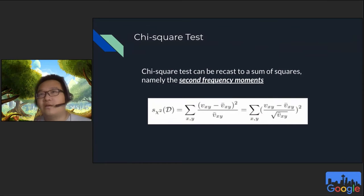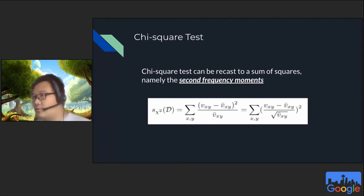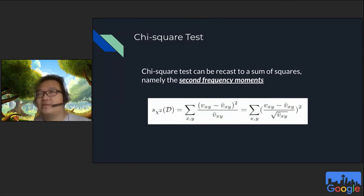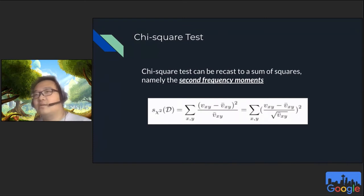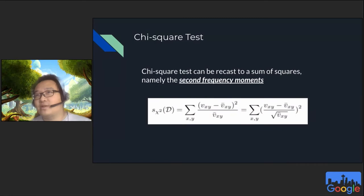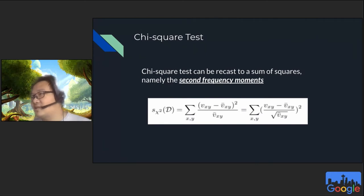We want to do this in a federated setting and focus on the well-known chi-square test — a correlation test that tells you if two random variables are correlated. The key insight is that the chi-square test can be rewritten in the form of a sum of squares, which has exactly the same format as second frequency moments. So we recast the problem to estimating second frequency moments in a federated setting while preserving security and privacy. The challenge is that second frequency moments is not a linear statistic, so it cannot be easily used with techniques like secure aggregation.